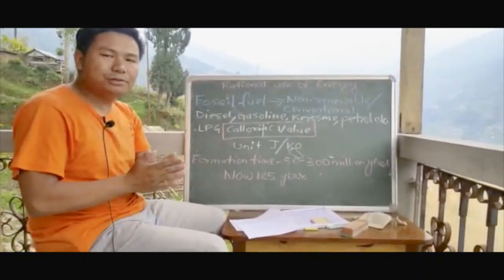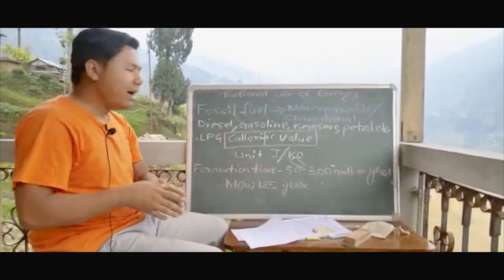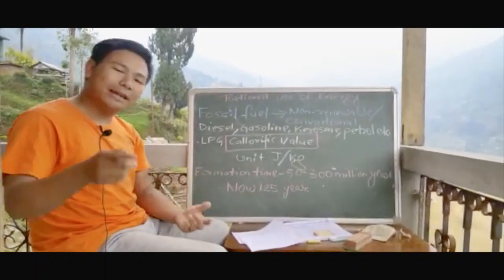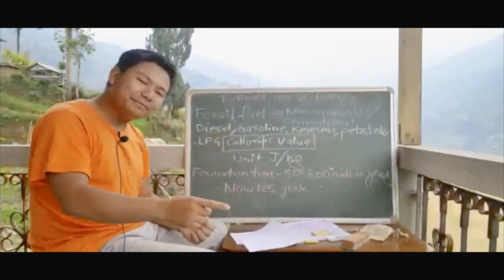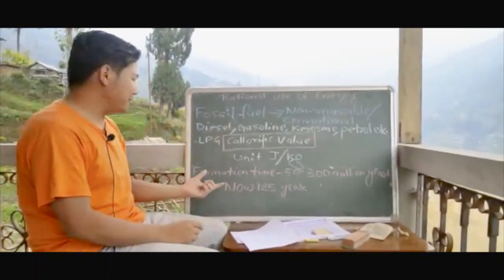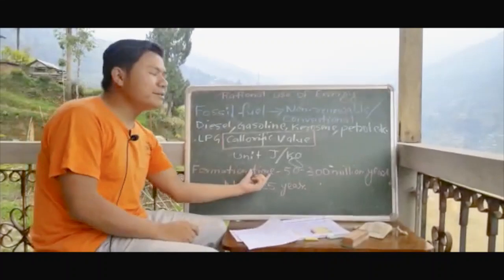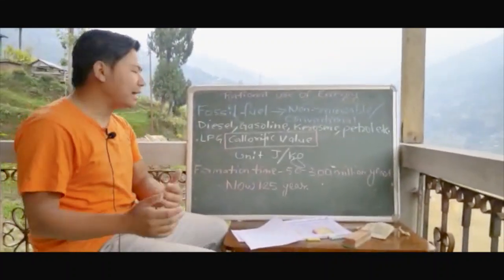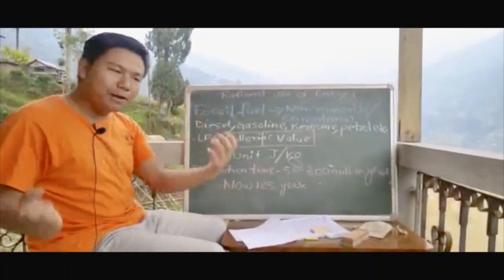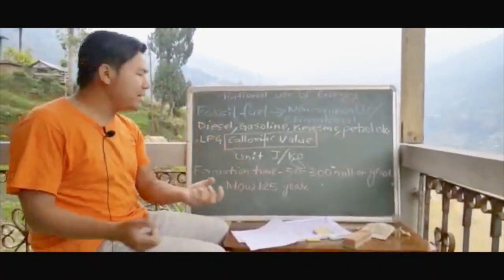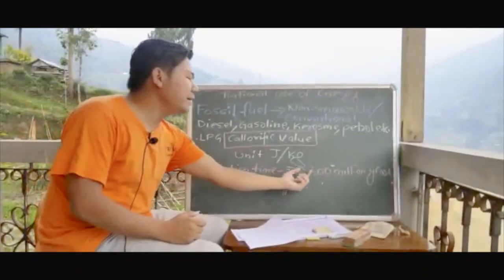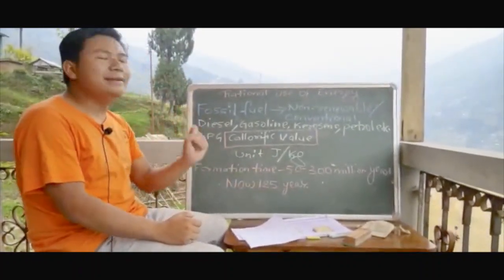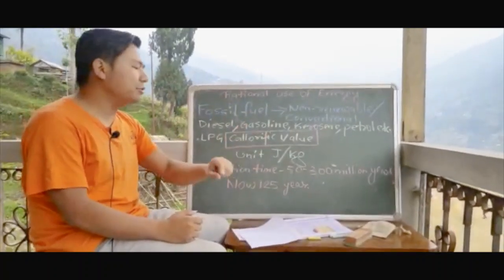Now let us discuss how much fossil fuels we have used till now. Can you guess? The formation time of fossil fuels — it takes about 50 to 300 million years for fossil fuels to form and be deposited.